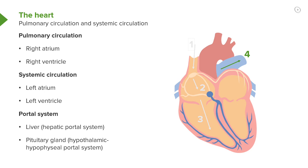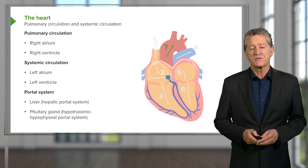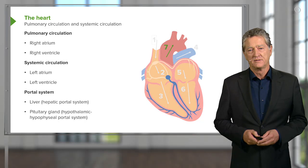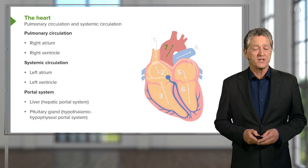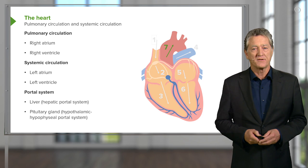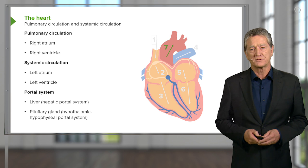That newly oxygenated blood then returns into the left atrium, where it passes directly into the left ventricle. The left ventricle contracts and passes blood out through the aorta to the rest of the body. So that's the sequence of blood flow through the heart. Remind yourself of the physiology of the heart and the pumping action — the atria contracting together and the ventricles contracting together.